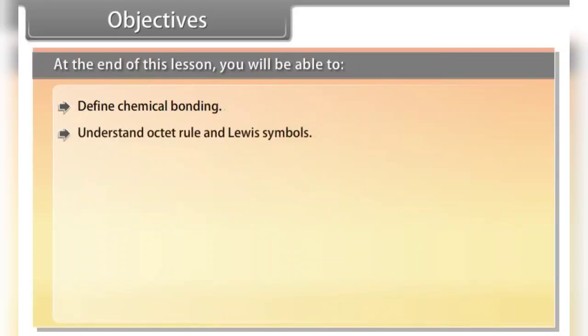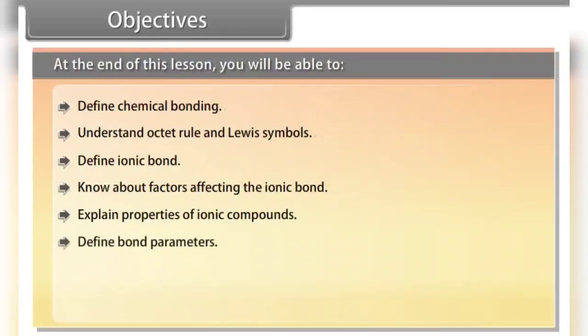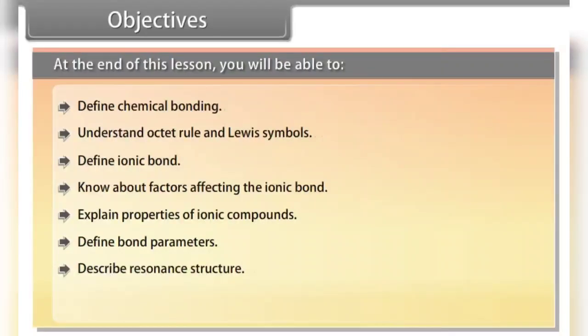At the end of this lesson, you will be able to: define chemical bonding; understand the octet rule and Lewis symbols; define ionic bond; know about the factors affecting the ionic bond; explain properties of ionic compounds; define bond parameters; describe resonance structure; and know about polarity of bonds.